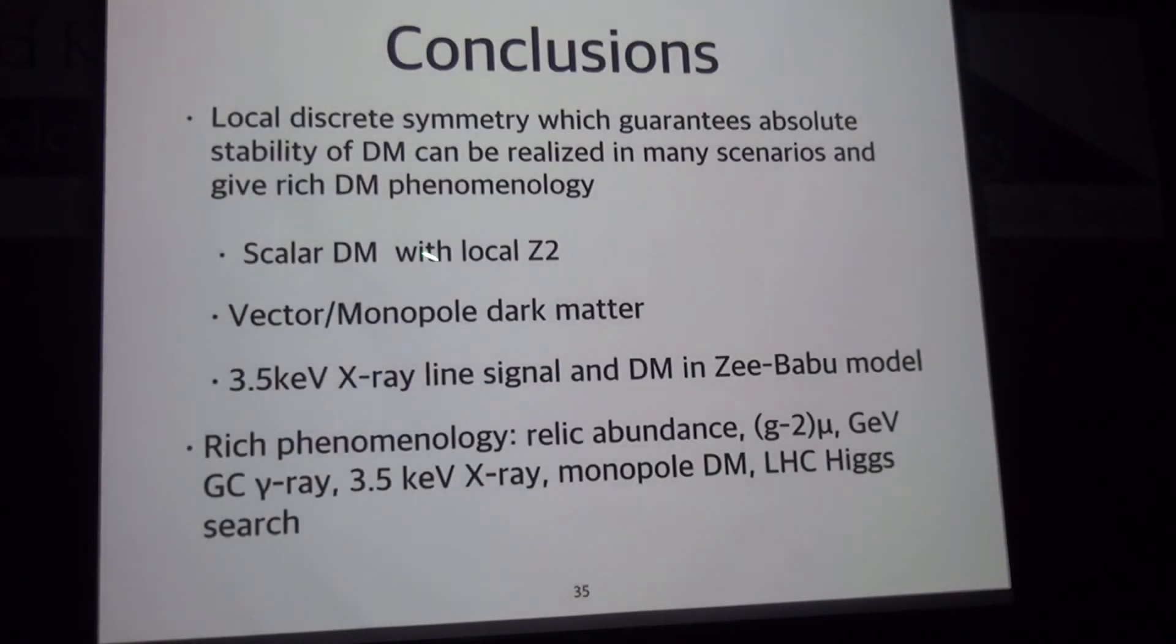This is the conclusion. We considered three dark matter models with local gauge symmetry. And they have rich phenomenology, such as they can explain muon g-2 and GeV gamma-ray from the galactic center, x-ray line, and monopole dark matter can be a candidate. And they can be searched at LHC. Thank you very much. Thank you very much. Nice presentation. We are behind schedule, but I think we can now answer quick questions.